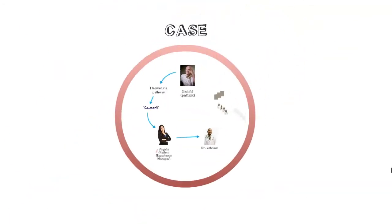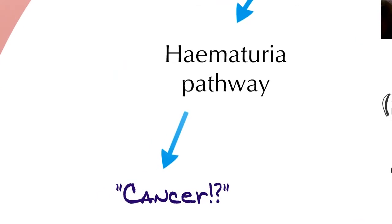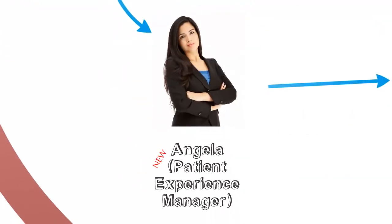Let me introduce you quickly to the case. Meet Harold, our patient. Harold's been passing blood and as a result he's been put on the Haematuria pathway. This pathway is really important because it can tell you whether or not you have cancer. So obviously getting a really quick diagnosis is really important here. Unfortunately, in Harold's case, it took 61 days to get him a diagnosis.